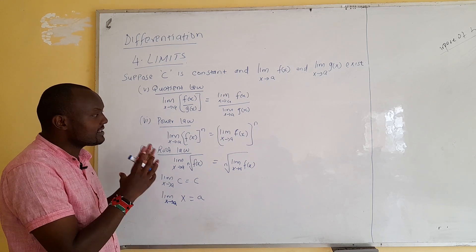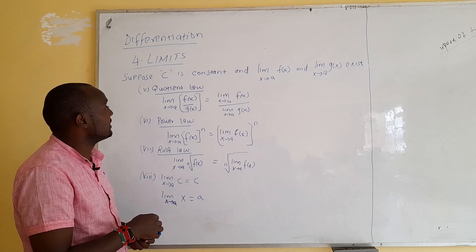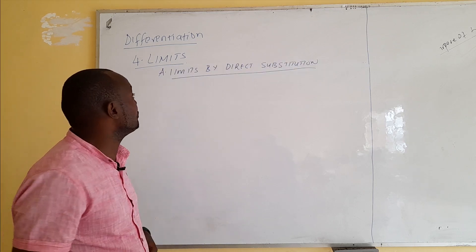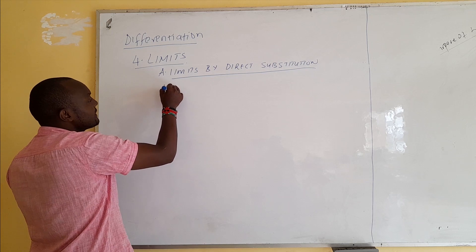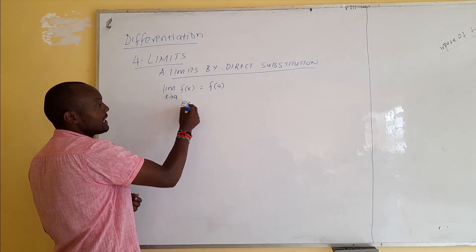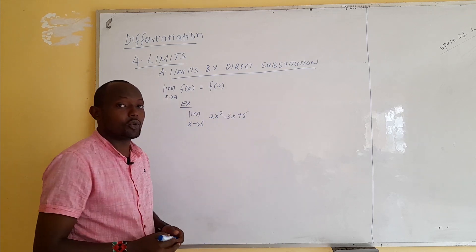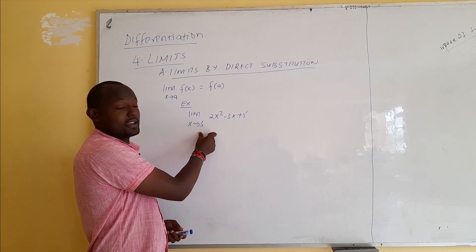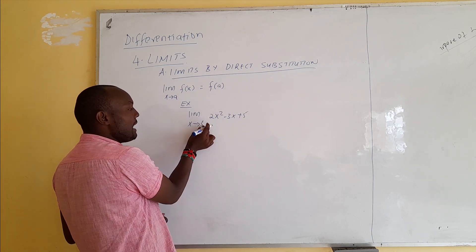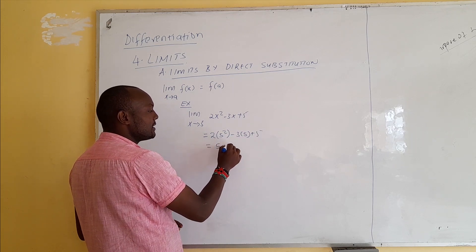Limits can sometimes be challenging, but when you get these laws it will be easy to solve them. Now we want to look at examples — how do we solve limits by direct substitution? We know that the limit as x approaches a of f(x) equals f(a). For example, find the limit as x approaches 5 of 2x² - 3x + 5. Since the limit as x approaches 5 of f(x) equals f(5), we substitute: 2(5²) - 3(5) + 5.